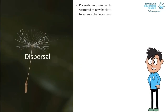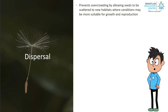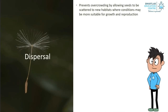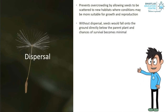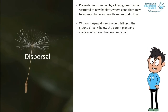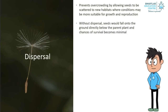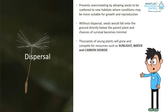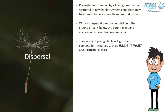Dispersal prevents overcrowding by allowing seeds to be scattered to new habitats, where conditions may be more suitable for growth and reproduction. Without dispersal, seeds would fall onto the ground directly below the parent plant, and chances of survival become minimal. Thousands of young plants will grow and compete for resources such as sunlight, water, and carbon dioxide.